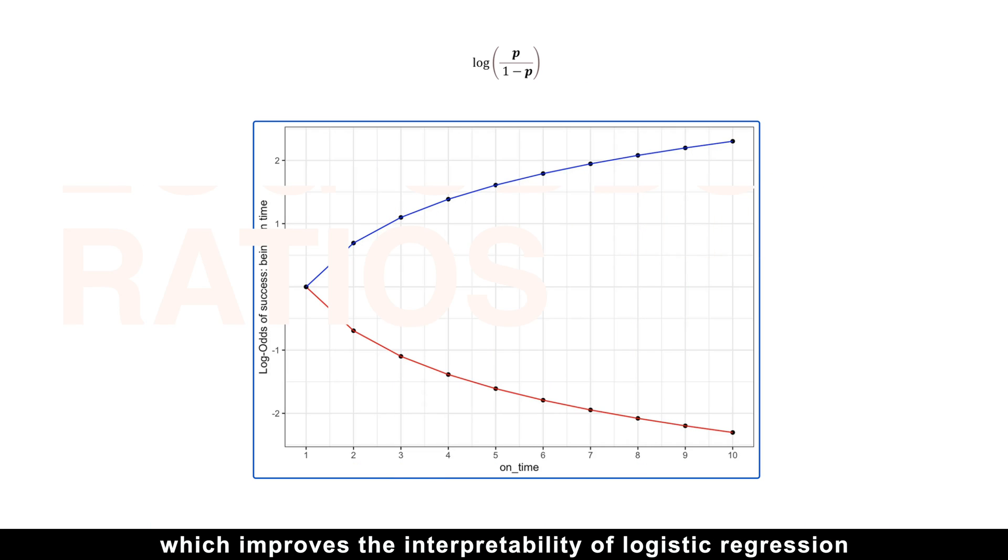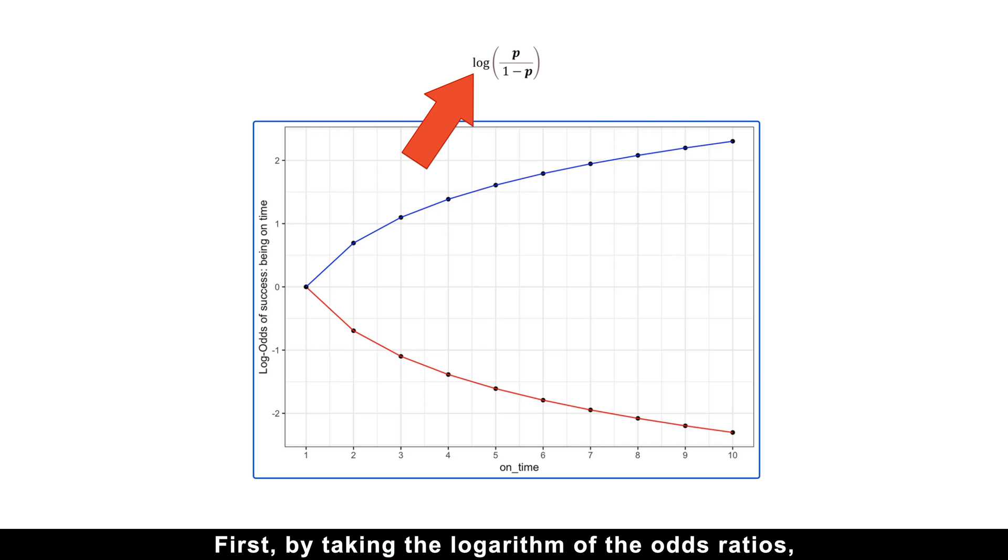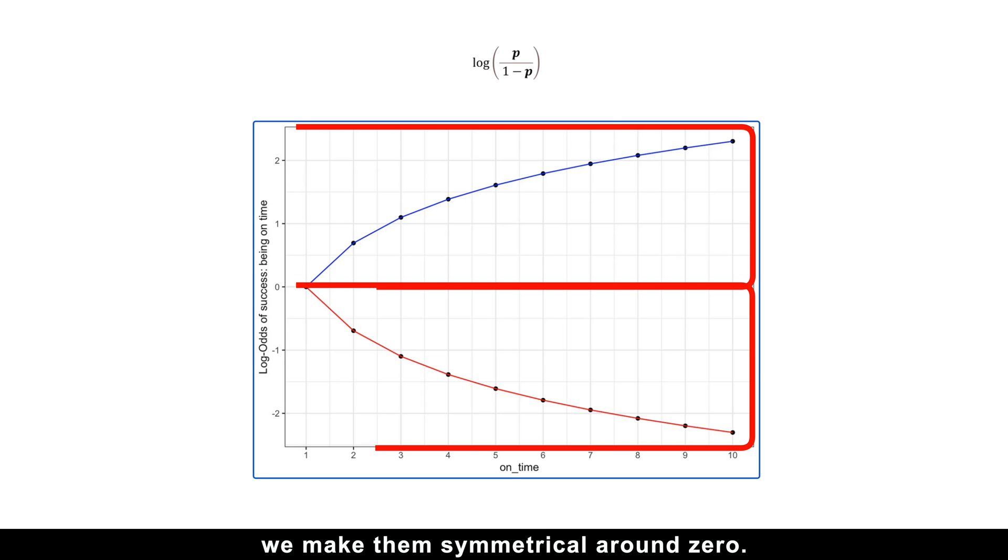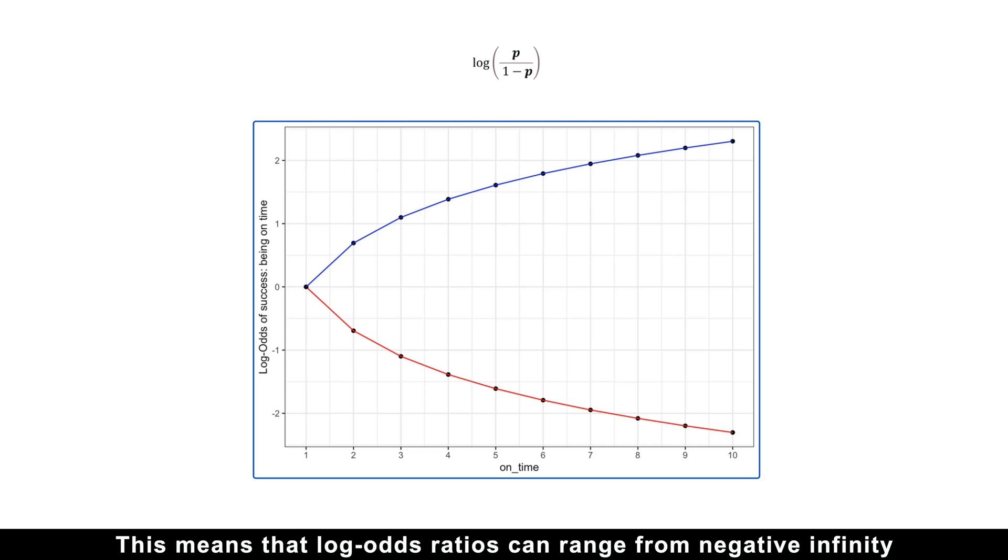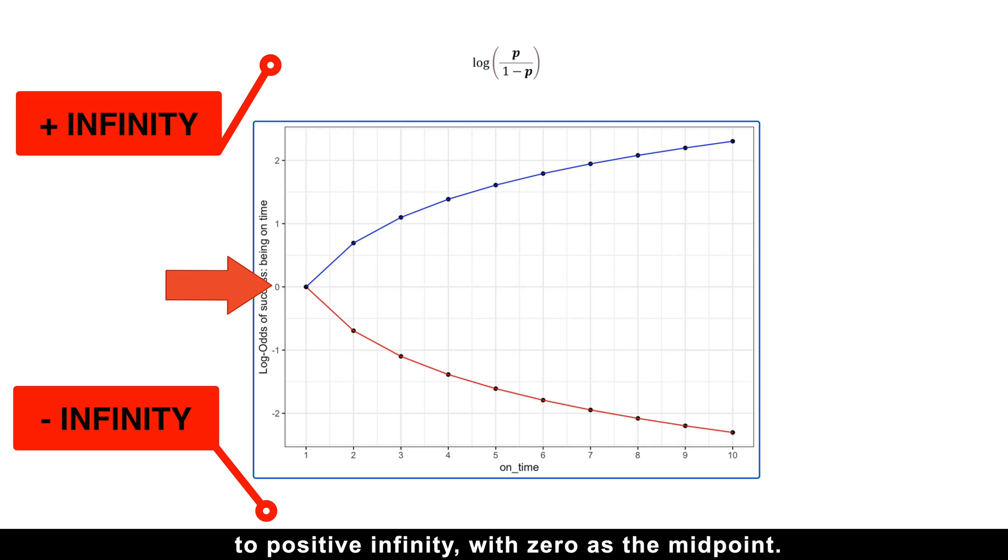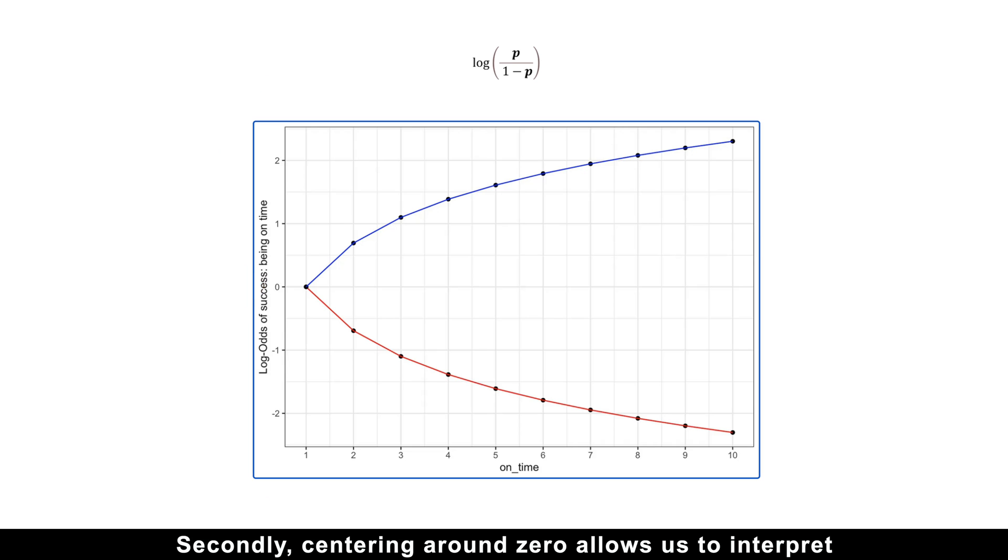First, by taking the logarithm of the odds ratios, we make them symmetrical around zero. This means that log odds ratios can range from negative infinity to positive infinity, with zero at the midpoint.